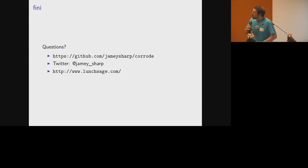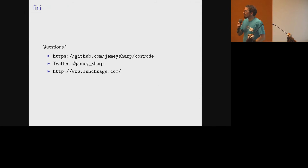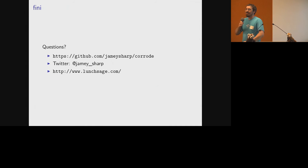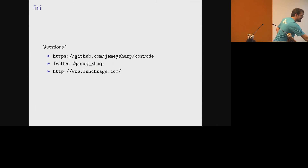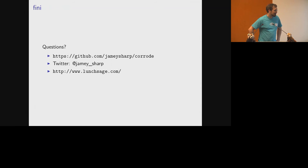That is my overview of Corrode and some techniques I'd like to encourage people to try in your own projects. Q: Right near the beginning you said the primary limitations control-flow-wise are goto and switch - do you have an idea about how you might handle those in Rust?